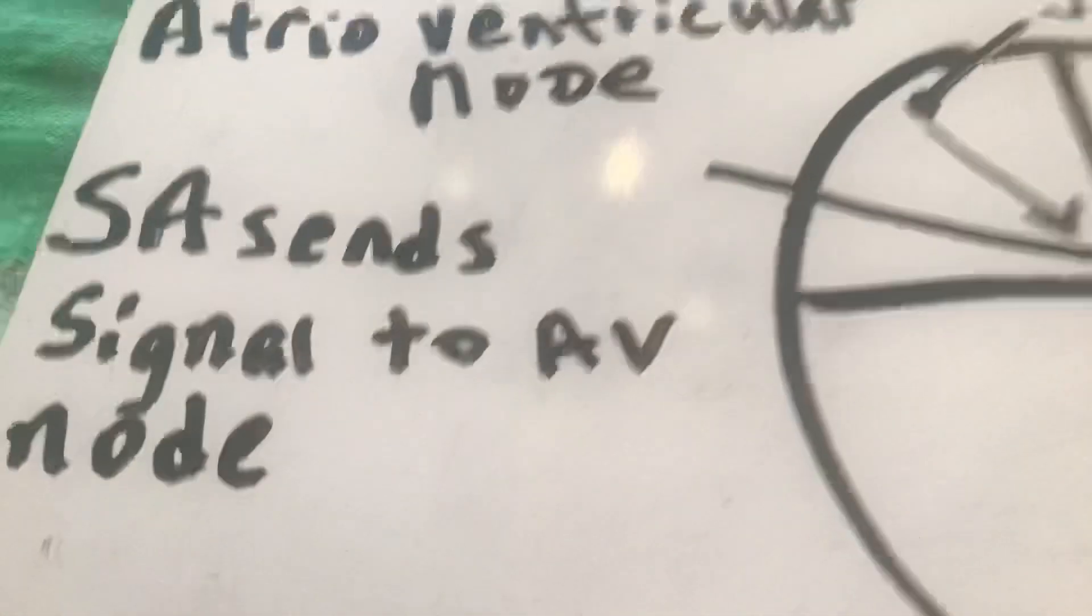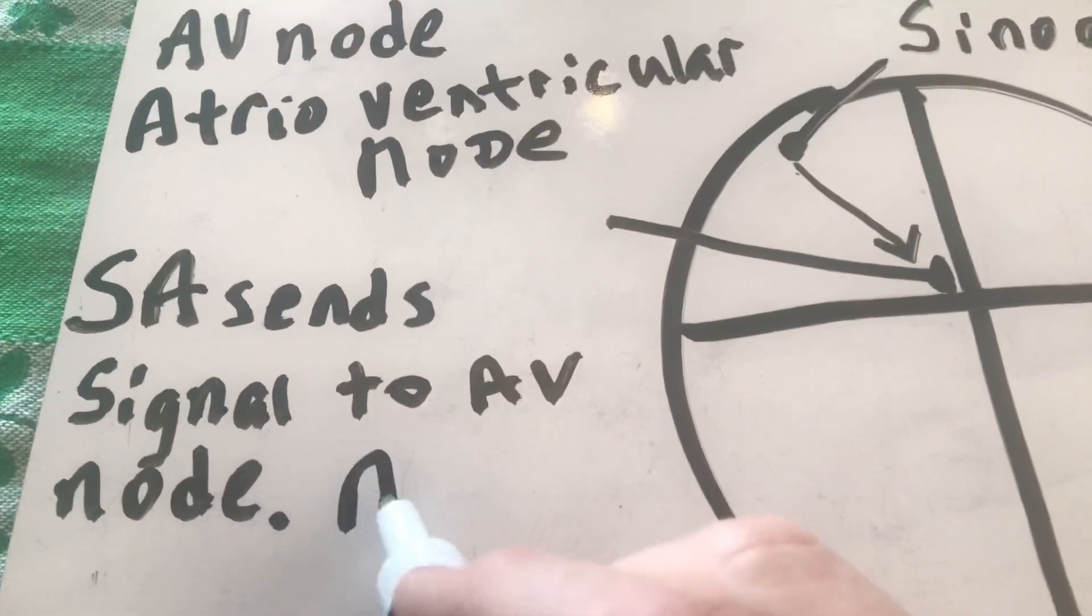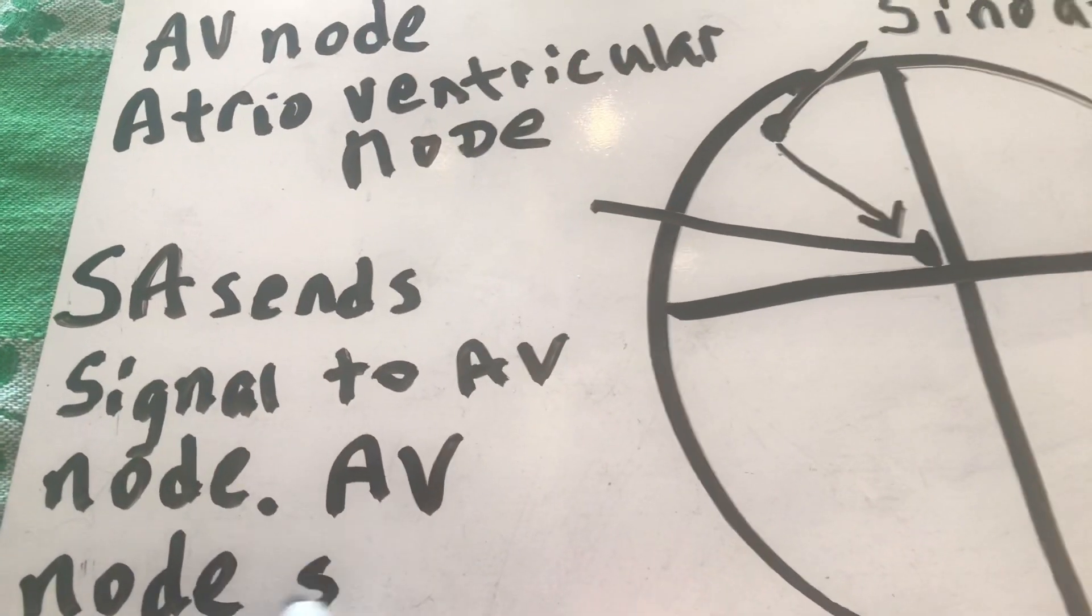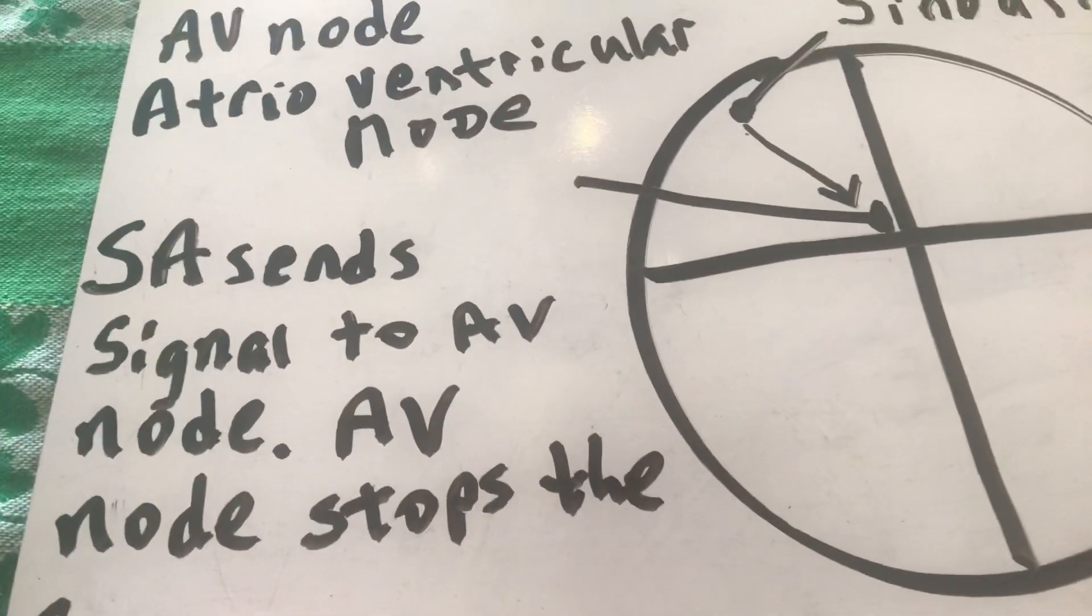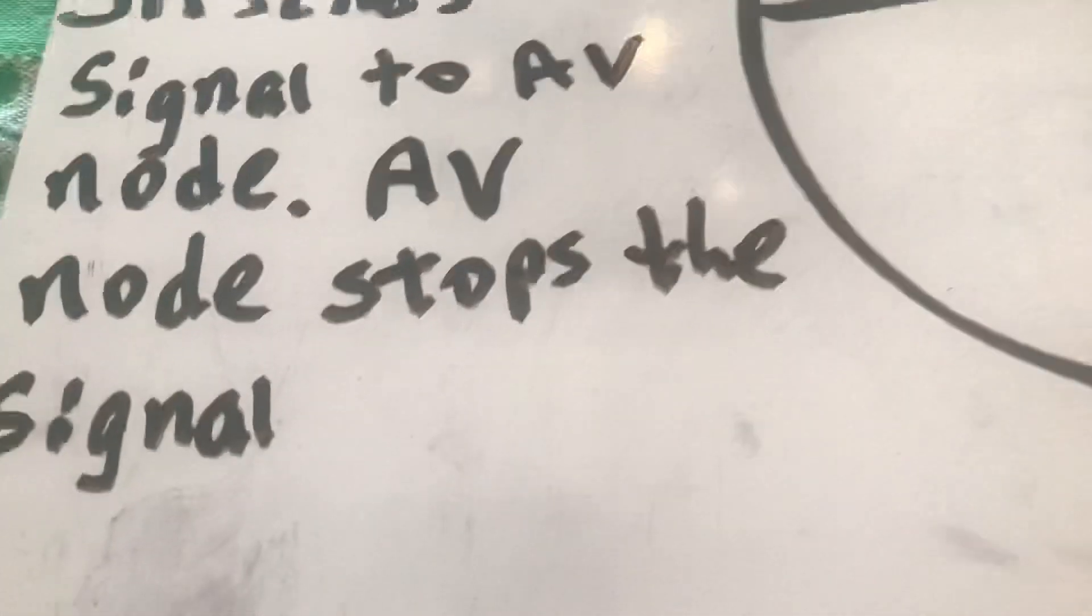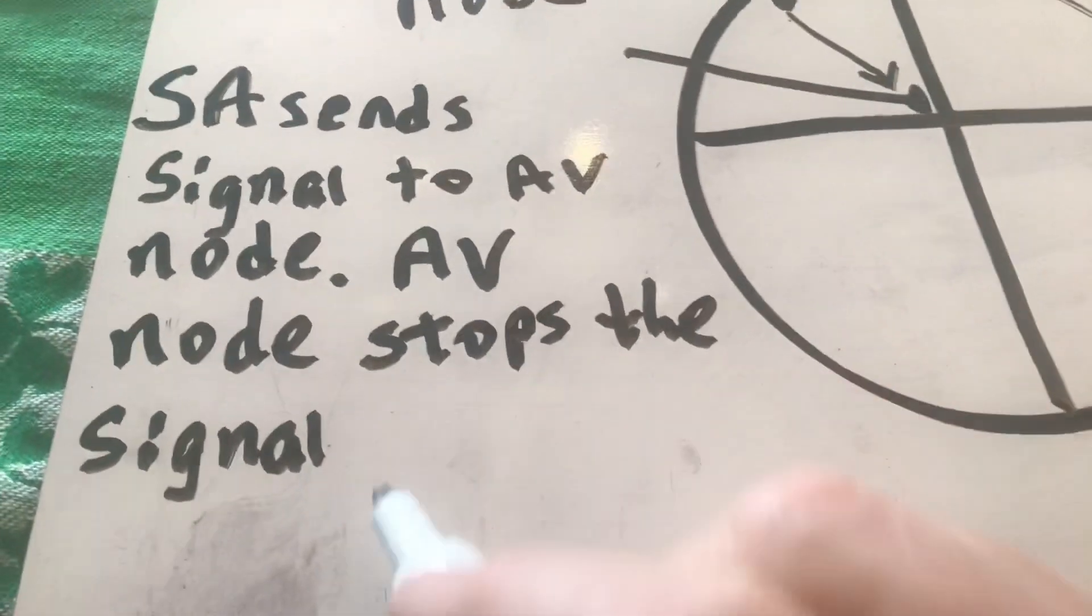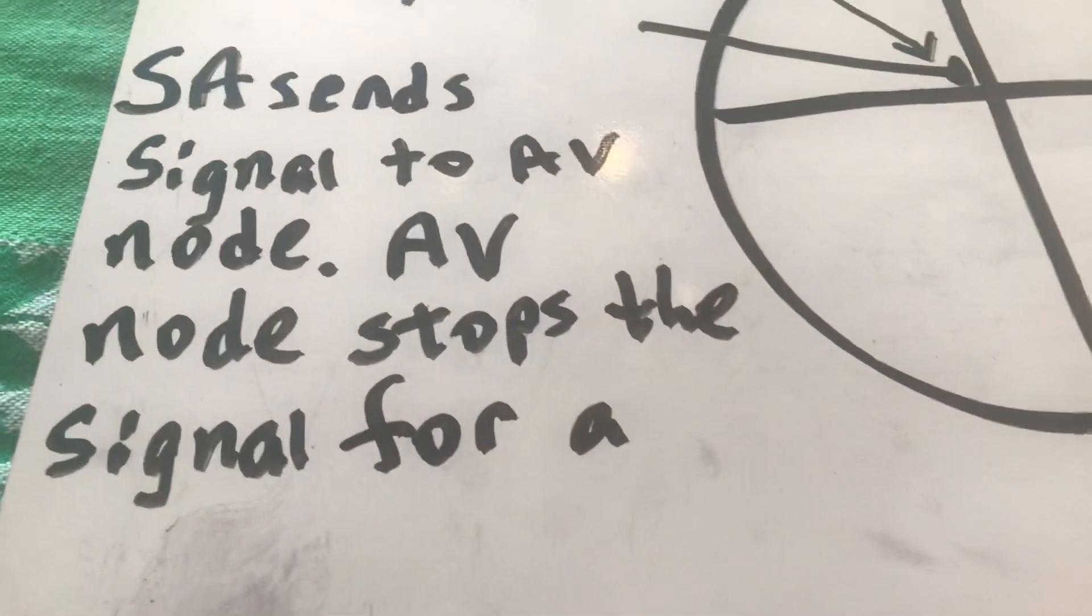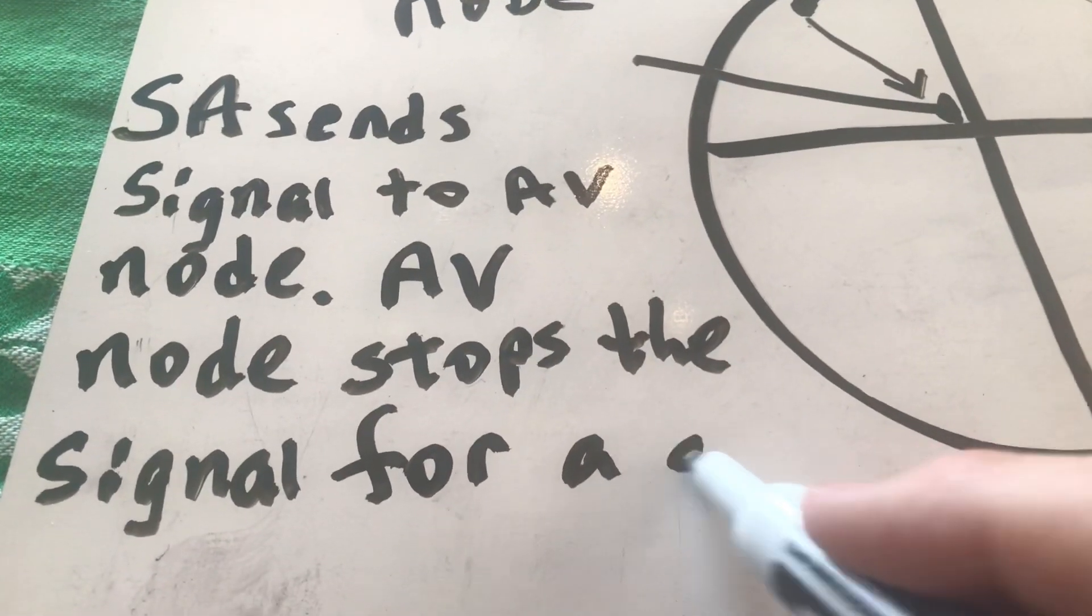Now what the AV node is going to do is it's going to stop that signal. It stops the signal, then what's going to happen is after it stops the signal, it just stops it for a short period of time. It's actually less than a second, it's like a millisecond.